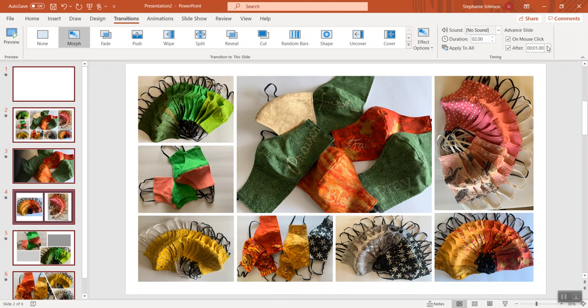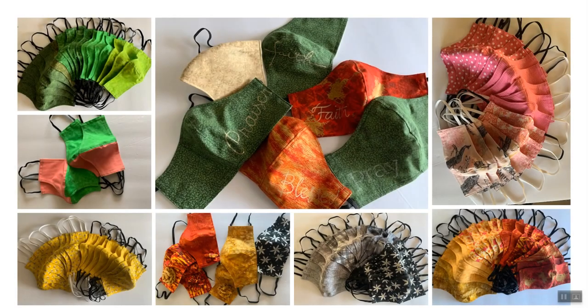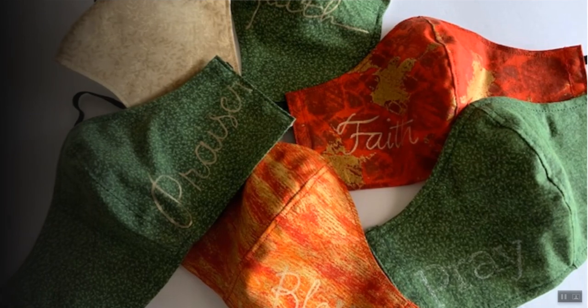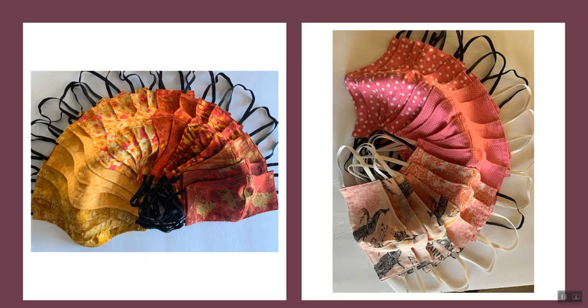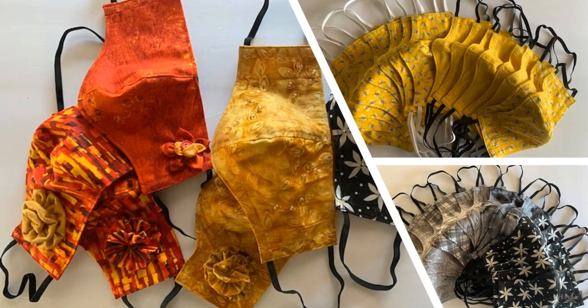I want to make sure this runs by itself, so I'll set a couple of seconds and hit Apply to All. It'll just go from one to the other automatically. Now I'm going to show you how it looks and then how to make Morph a little more smooth. Let's go from the beginning - it morphs every two seconds to another slide. That's pretty smooth, but then the next one doesn't have the effect I want. When I morph from the slide with all the masks to one that doesn't have those same pictures, it's not as smooth.